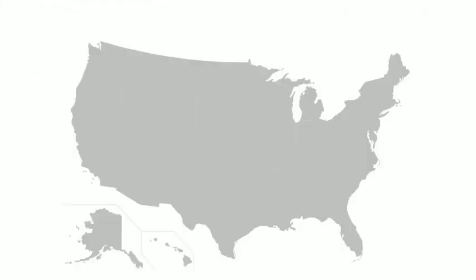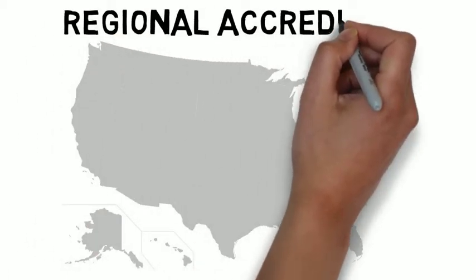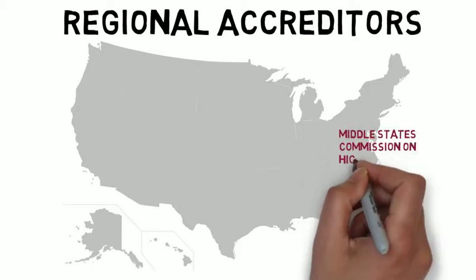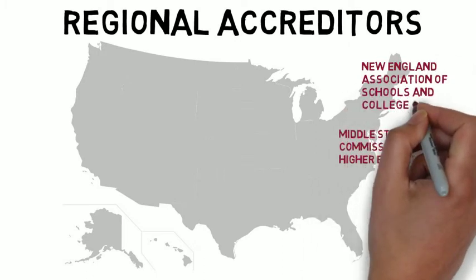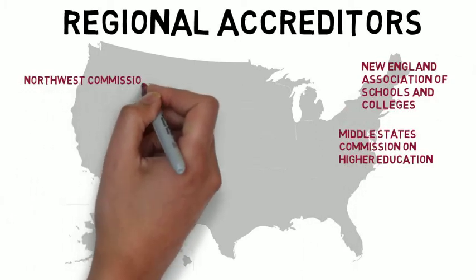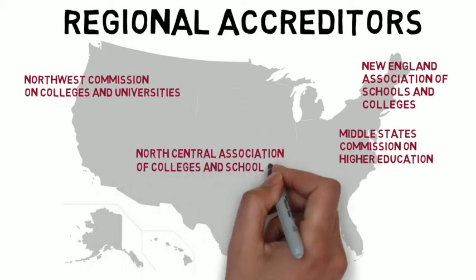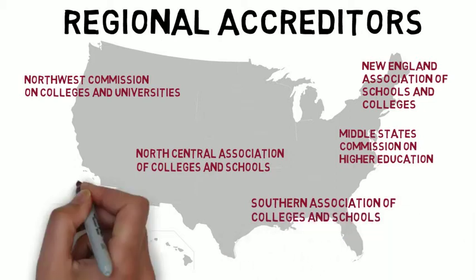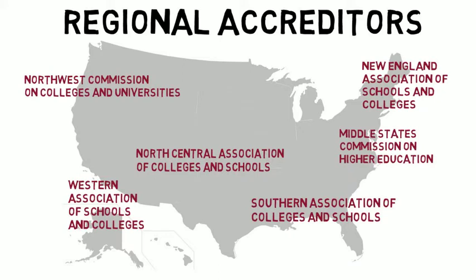There are hundreds of different accrediting agencies in the United States; however, there are six regional accreditors to which most colleges and universities belong. They are the Middle States Commission on Higher Education, the New England Association of Schools and Colleges, the Northwest Commission on Colleges and Universities, the North Central Association of Colleges and Schools, the Southern Association of Colleges and Schools, and the Western Association of Schools and Colleges.